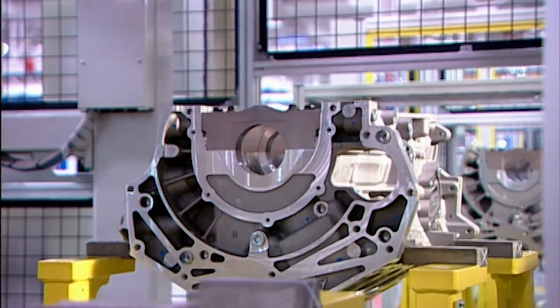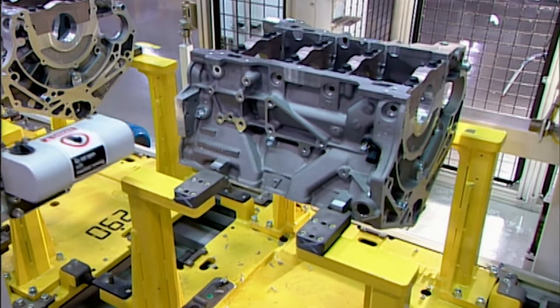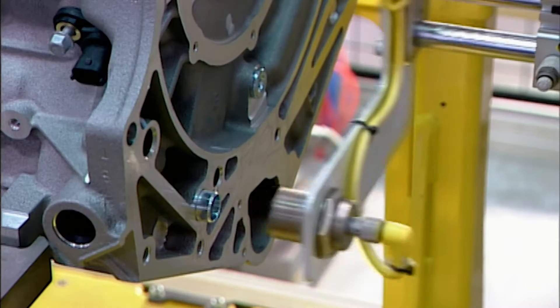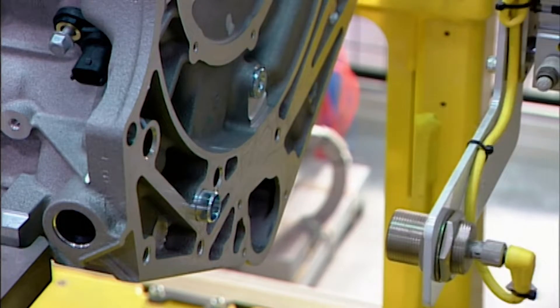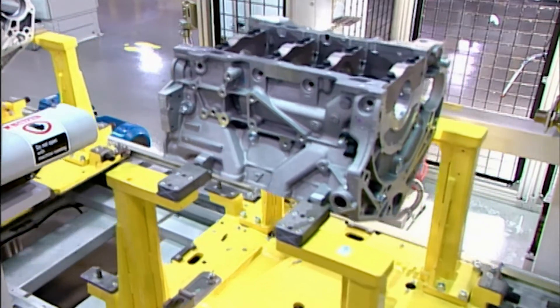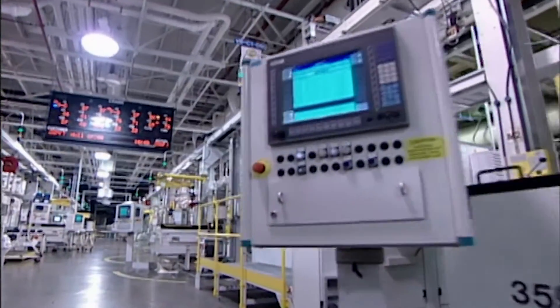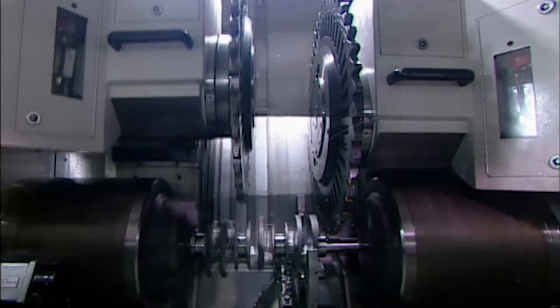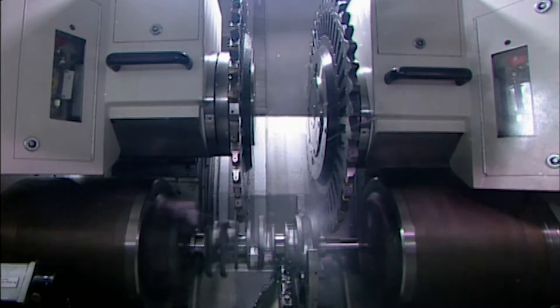After machining, the engine block travels upside down to the engine assembly line. When it arrives, a scanner records the block's traceability code, a barcode that enables the factory to track the block through every stage of production. As the engine block travels down the line, devices ensure that each component is installed properly.